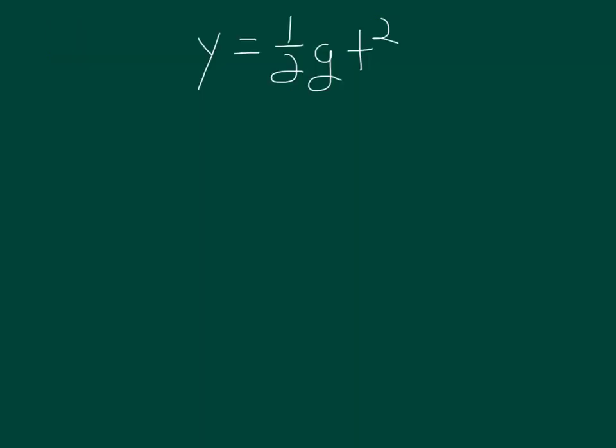In this formula, y is the vertical distance the object travels, g is 9.8 m/s², and t is how long it's in the air. The stone falls the height of the cliff, which is 44 meters — that's a known value. g = 9.8 is also known. What I'm solving for is t, how long it's in the air.